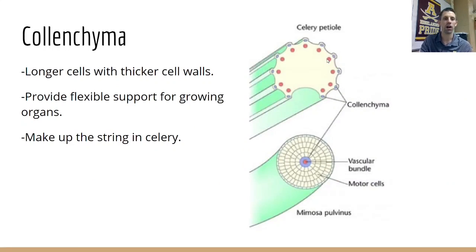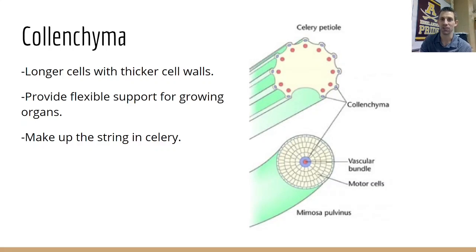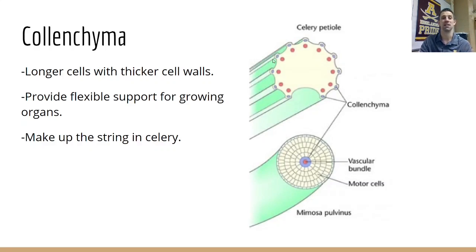Collenchyma, as I mentioned, provides flexible support. You'll typically find them surrounding structures, just inside of the epidermis — which is the outer covering of plant structures — or lining the veins inside of celery. In this cross-section of celery, the red spheres are all the vascular tissue, and the blue ones on the outside are the collenchyma cells, there to give the celery strength and support. So if you've ever eaten celery and got those strings stuck in your teeth, those are collenchyma cells.